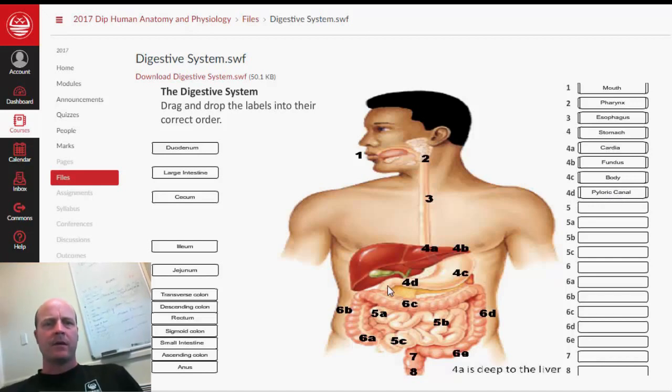Then our stomach, the food leaves our stomach, and enters the small intestine. It's called the small intestine because it's a small tube, but it's very long.